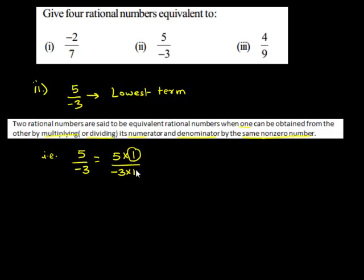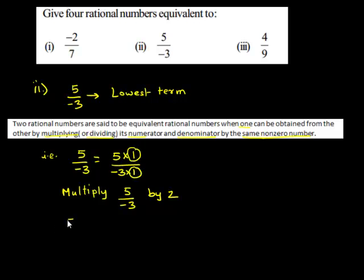The next equivalent number of 5 upon negative 3 can be obtained when we multiply 5 upon negative 3 by 2 — that is, both in its numerator and in its denominator. We get 5 times 2 is 10, upon negative 3 times 2 is negative 6.